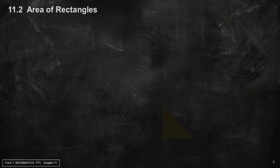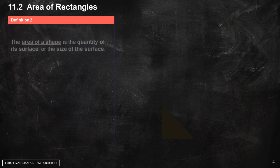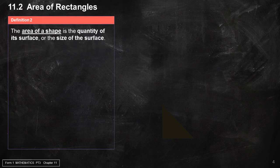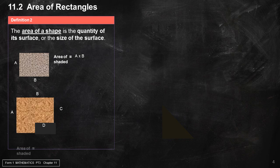11.2 Area of Rectangles. Definition 2: The area of a shape is the quantity of its surface, or the size of the surface. Area of Shaded equals A times B minus D, plus C times D.